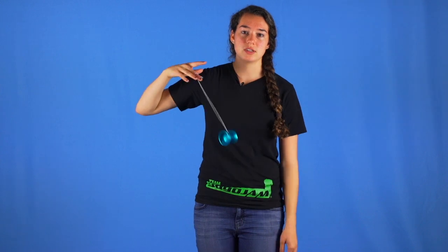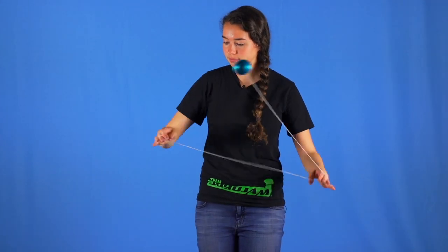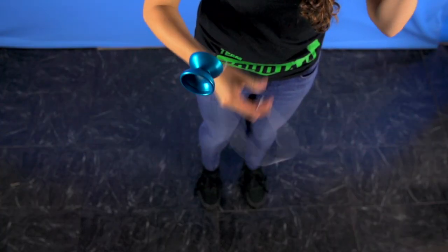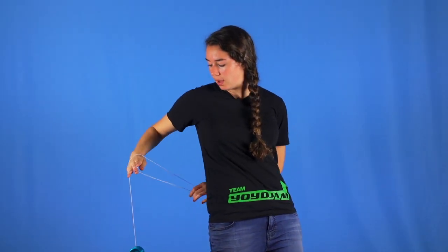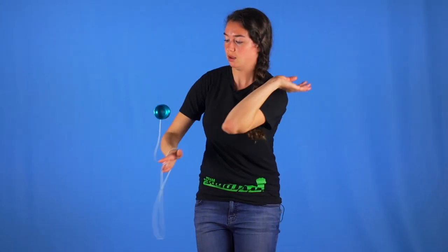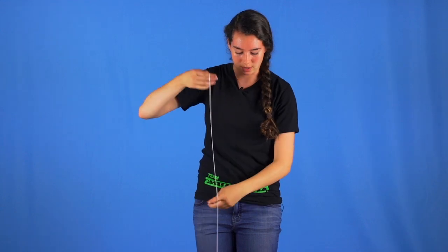So you can do a lot of variations with this trick like the double or behind the back, under your leg, catch it on your elbow. That is a trick that I use in one of my combos.